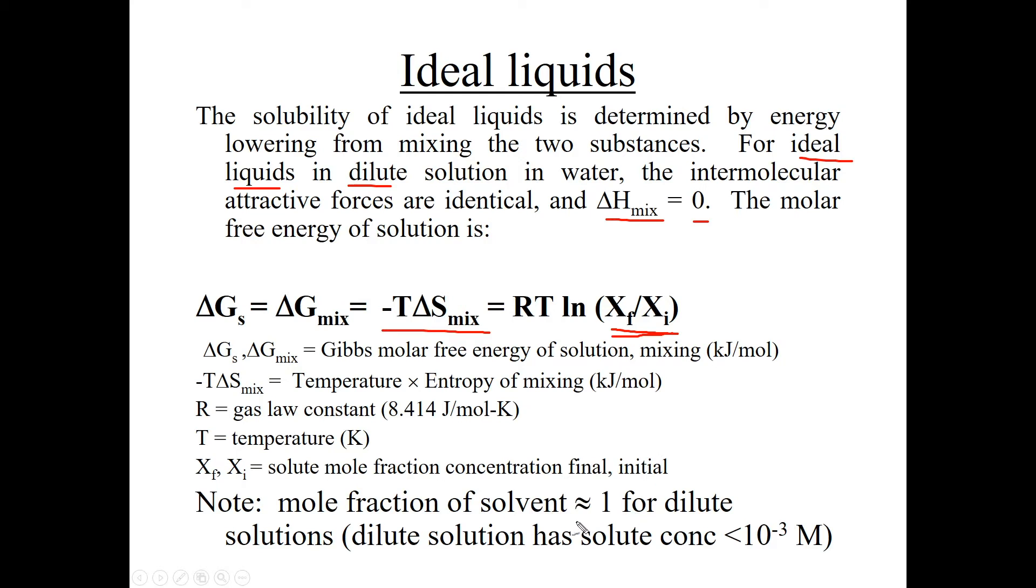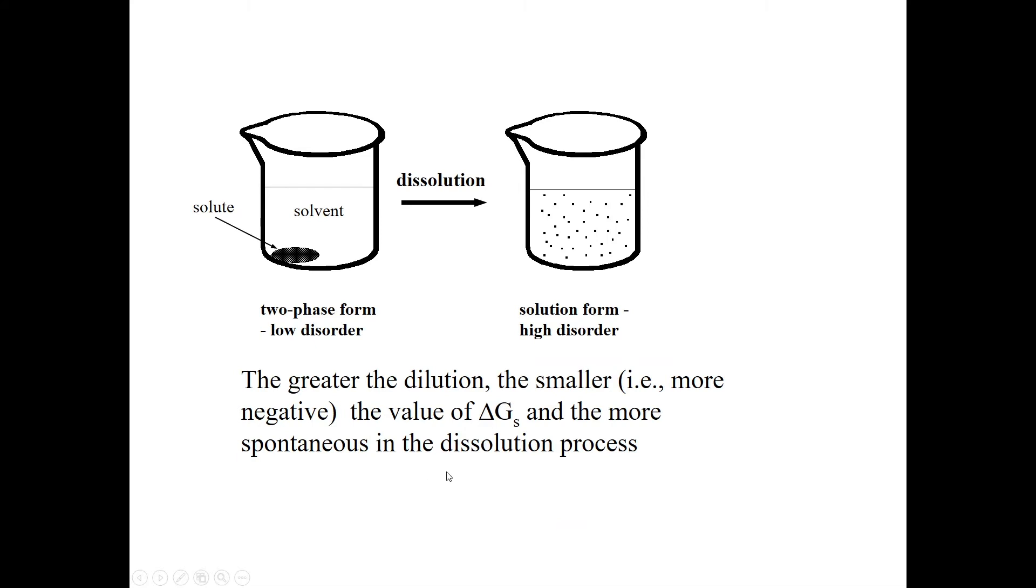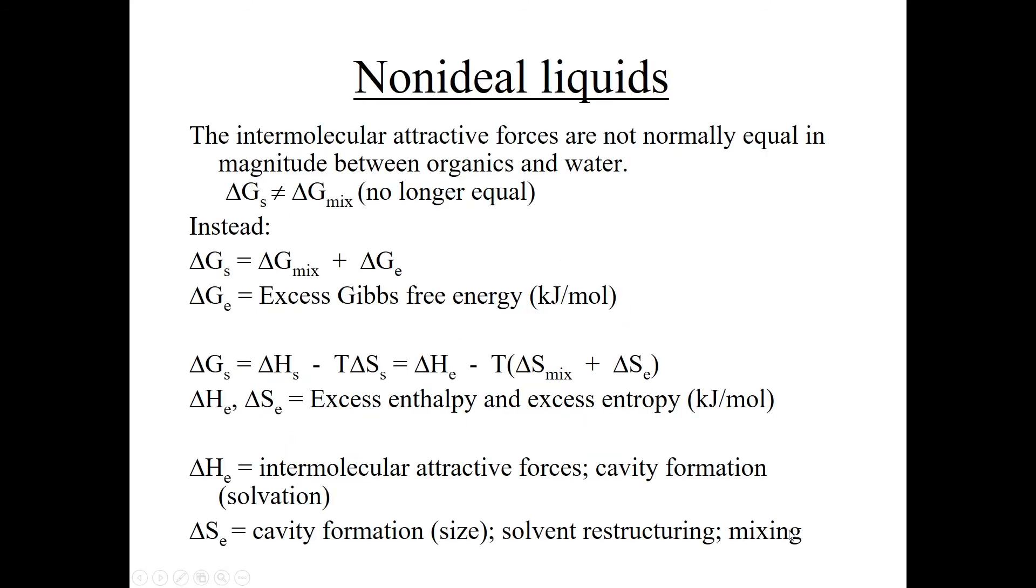The mole fraction of the solvent is going to be pretty close to one if you're in dilute solution. So we don't have to worry about its mole fraction concentration changing, so it's really just the mole fraction change in concentration for the chemical of interest, which we've throughout this have called chemical I. So the greater the dilution, the smaller and more negative the value of delta Gs will be and the more spontaneous the dissolution process. We already know that because the smaller delta G is, the less energy is required and so it's more spontaneous, the reaction is easier to move forward. That was for ideal liquids.